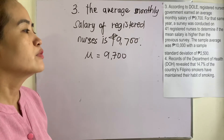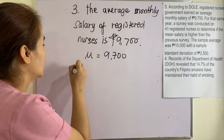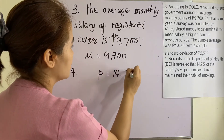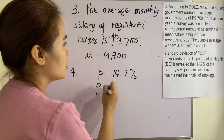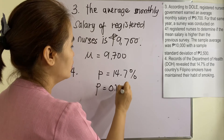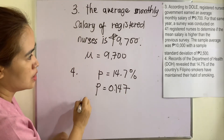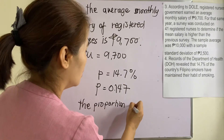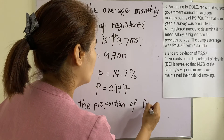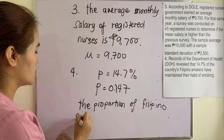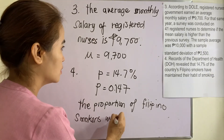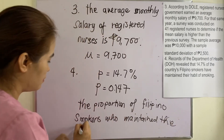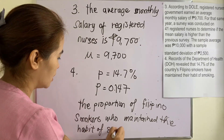The proportion p = 14.7%, which is equivalent to 0.147. So this is the proportion of Filipino smokers who maintained the habit of smoking after the program.